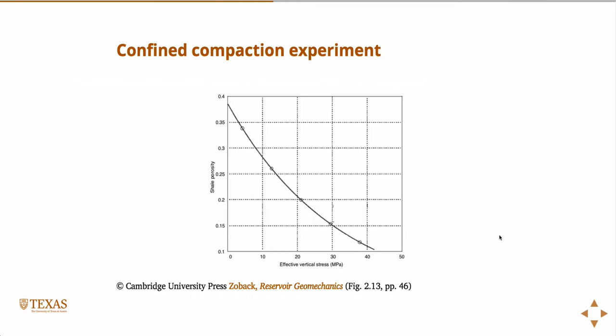There's something called a confined compaction experiment. This is essentially something you do in the laboratory. You take a core and you confine it, typically in a steel cylinder. Then you're going to apply an axial load to it. Let me draw you a picture. We're going to have a core and then we're going to take that core and put it in a steel sleeve because the steel is much stronger than the rock. Then we're going to apply an axial load to it.